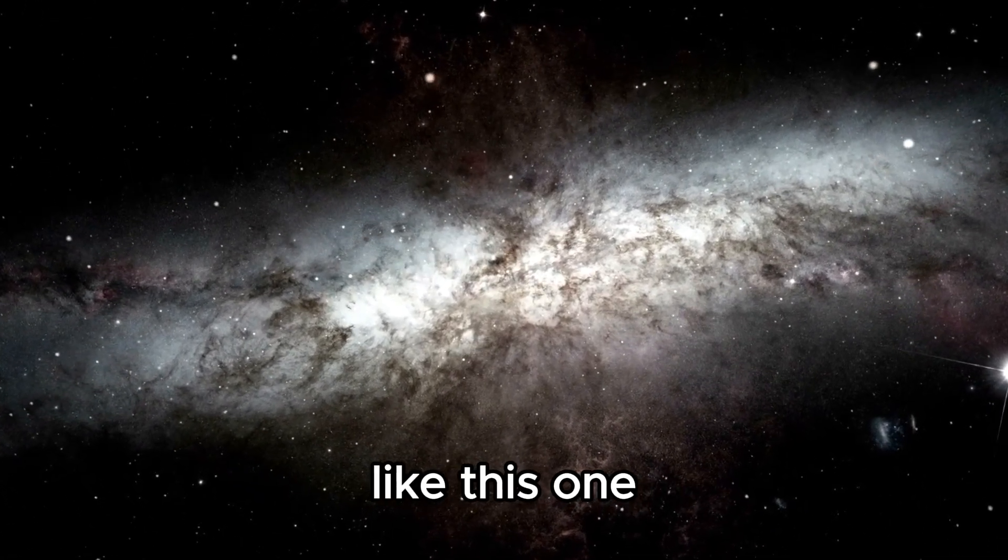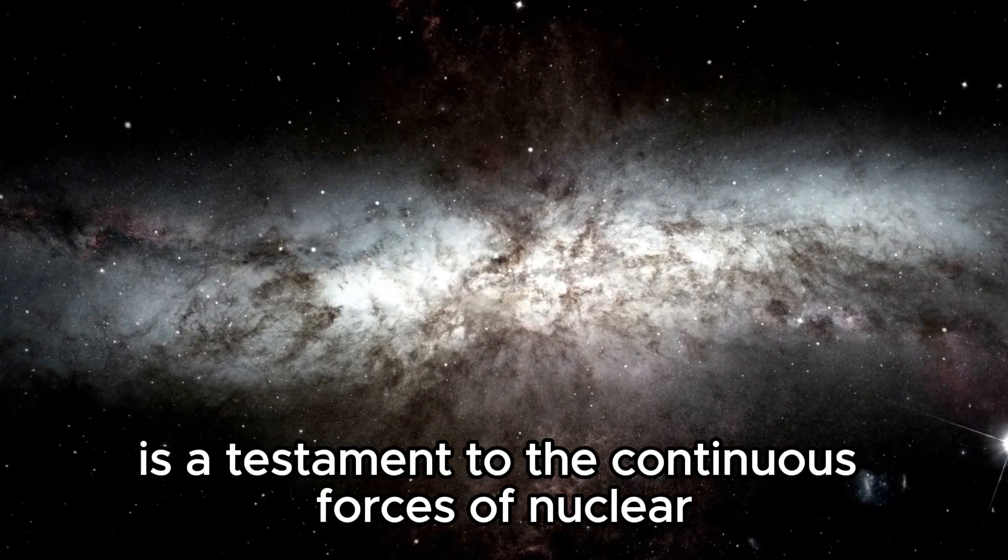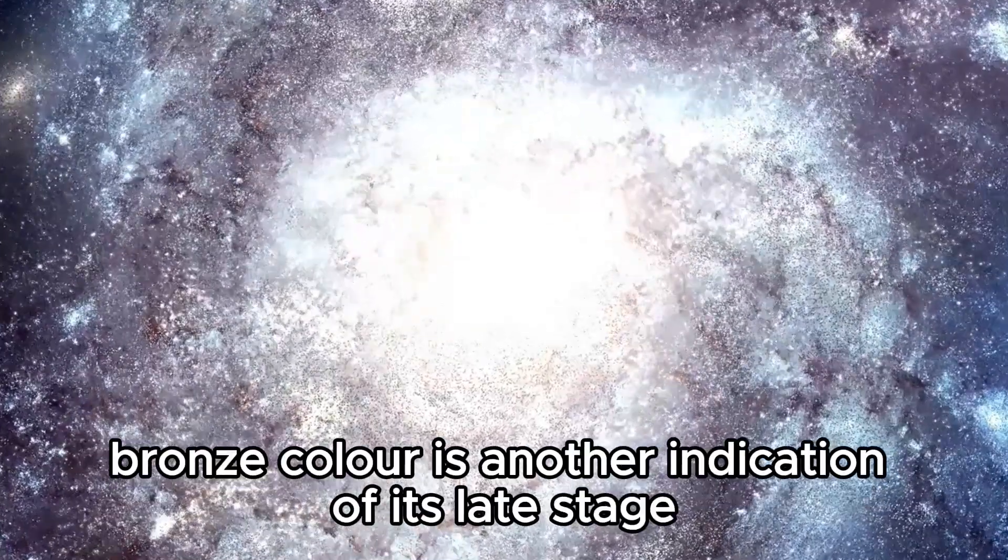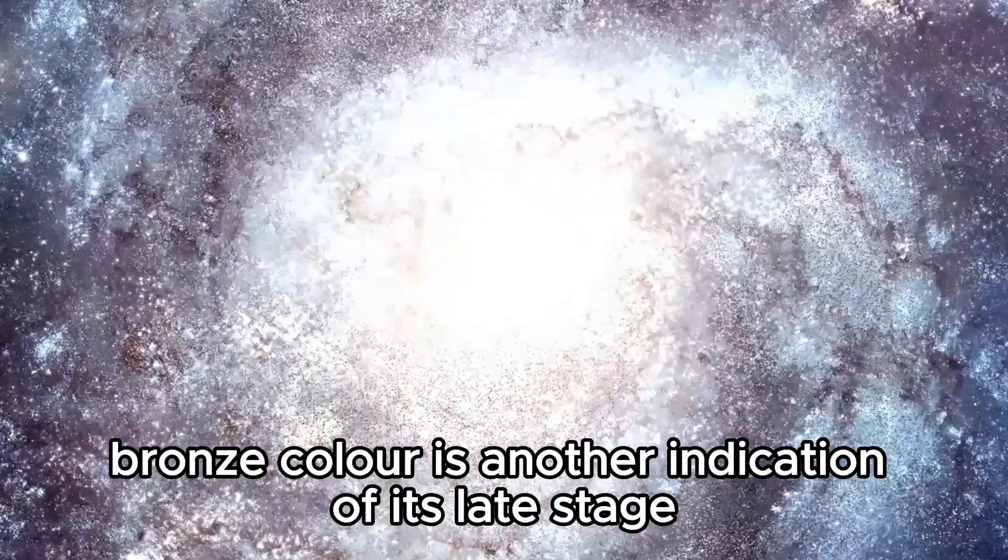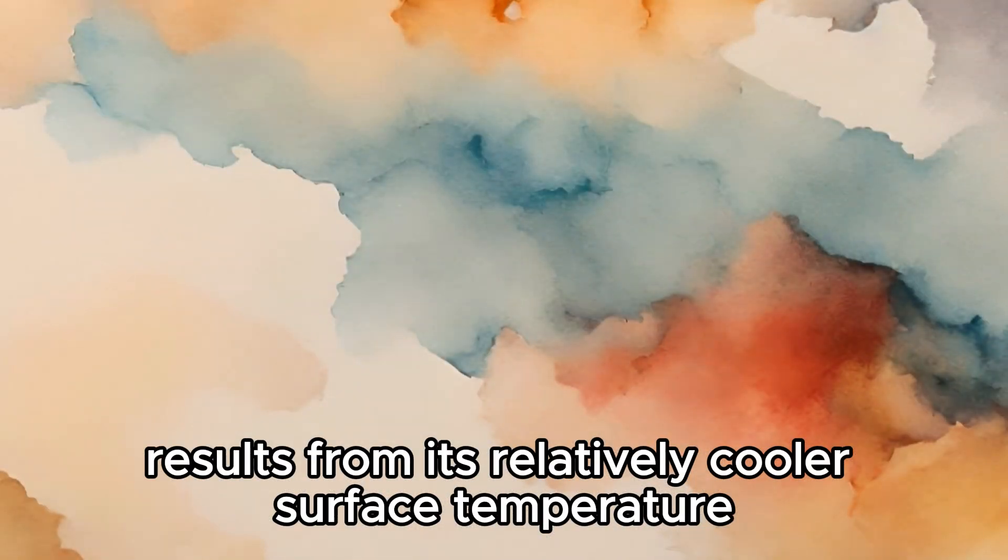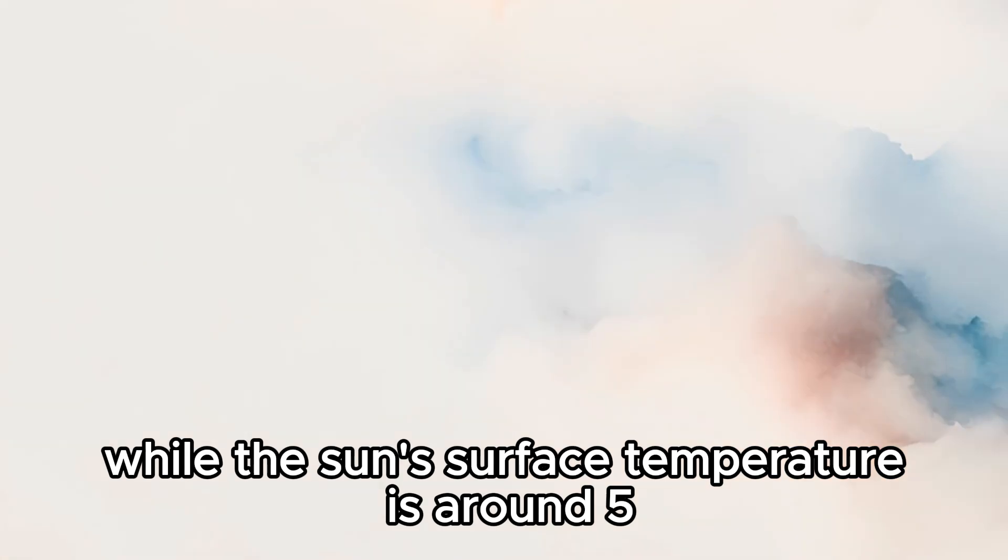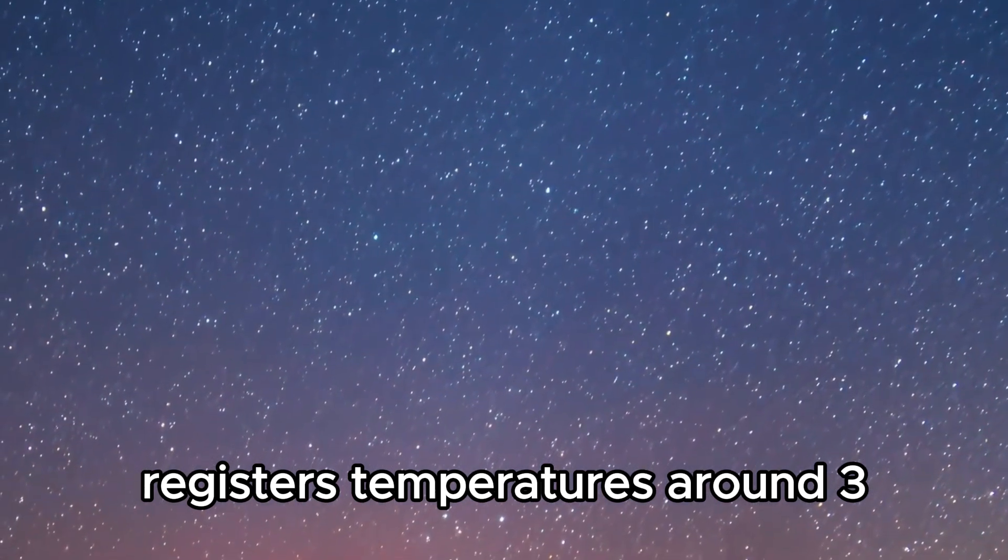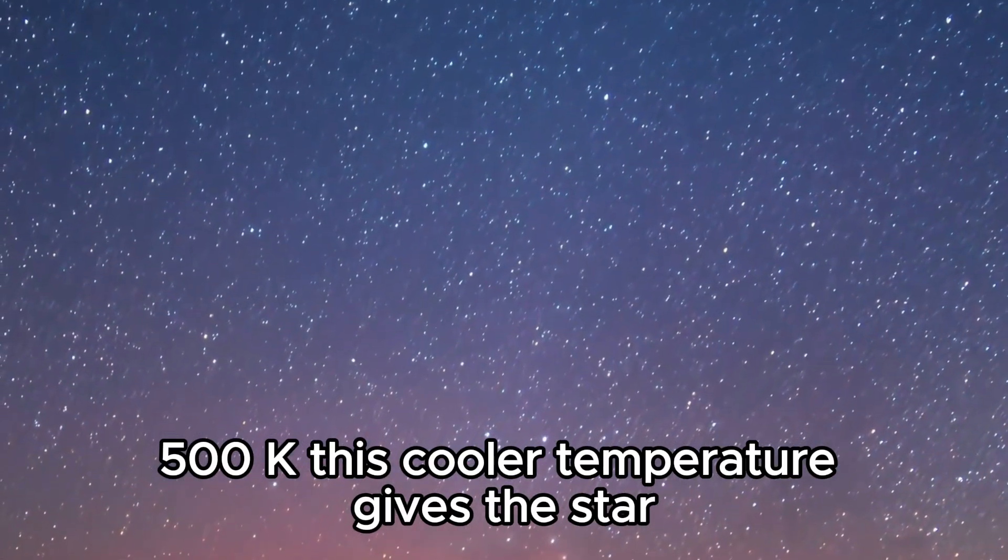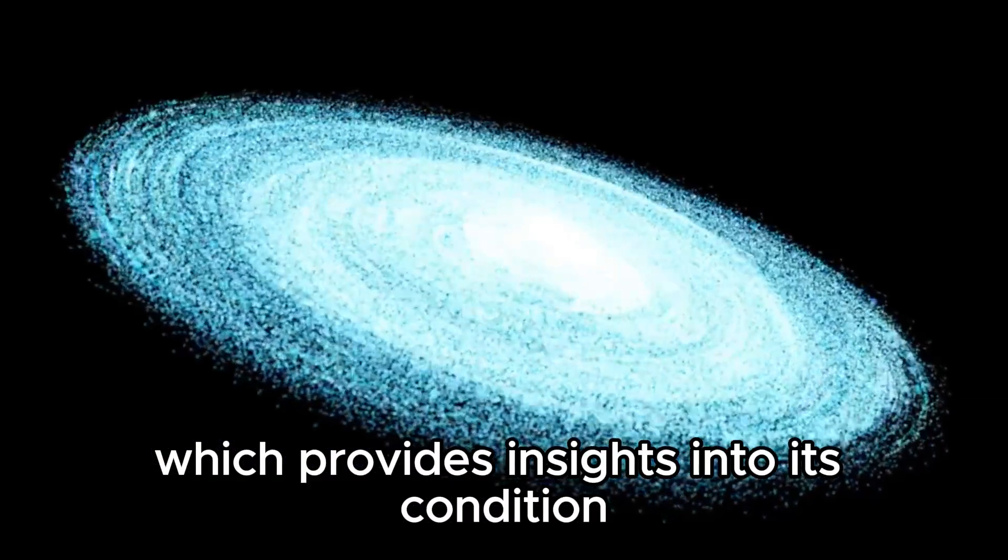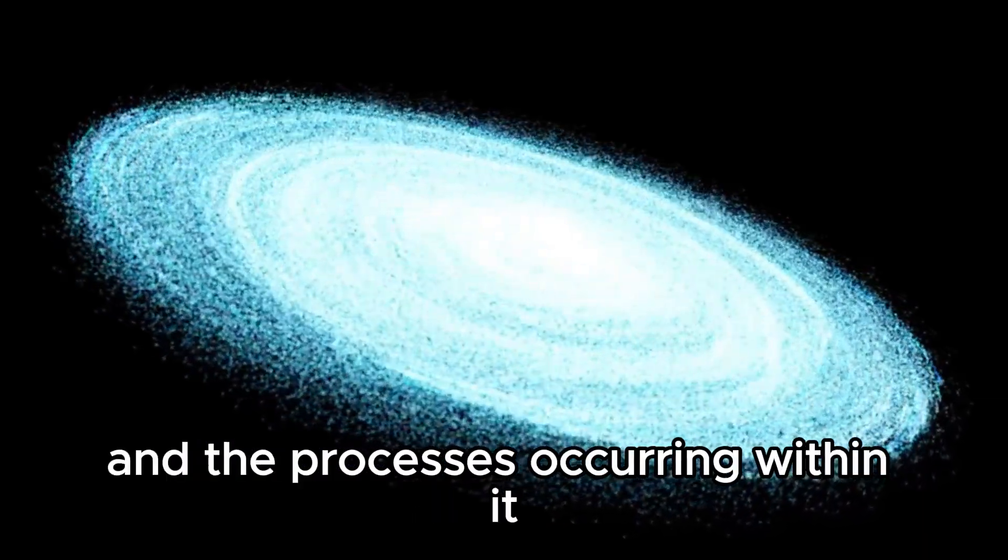The current state of stars like this one is a testament to the continuous forces of nuclear fusion and gravity driving their evolution. Its patchy bronze color is another indication of its late stage. The red hue results from its relatively cooler surface temperature compared to stars like our sun. While the sun's surface temperature is around 5,500 K, this star's cooler surface registers around 3,500 K. This cooler temperature gives the star its red appearance, which provides insights into its condition and the processes occurring within it.